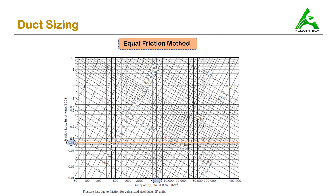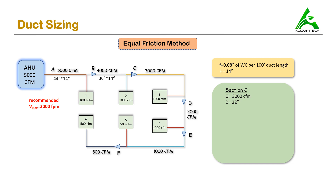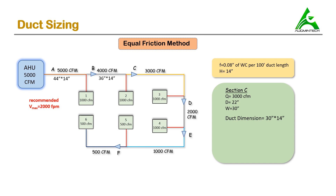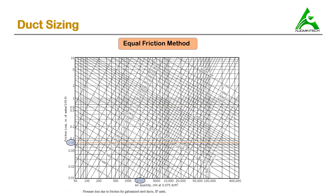For section C, the airflow rate is 3000 CFM. Using the chart, the intersection gives a diameter close to 22 inches. From the conversion chart, 22 inch diameter with 14 inch height gives a width of 30 inches. The duct dimensions for section C are 30 inches by 14 inches. The aspect ratio is 2.14, which is less than 4, so this is accepted.